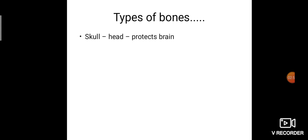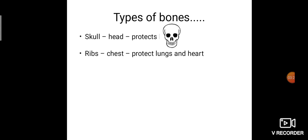Next, we will see the types of bones. We have 206 bones in total, but not all bones are the same size, shape, or function. The first bone is the skull, present inside our head, which protects the brain and gives shape to our face. The second bone is the ribs, present in our chest, which protect our lungs and heart.